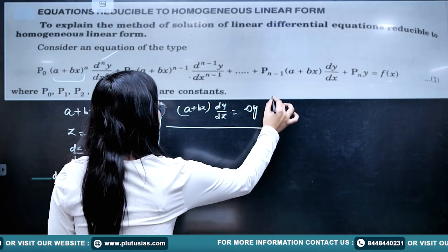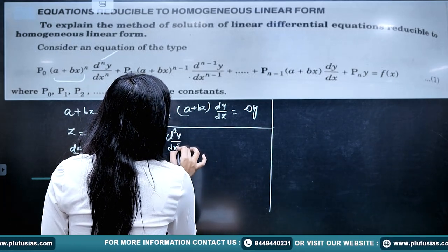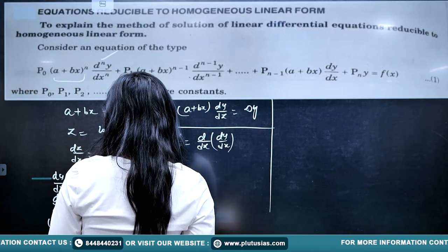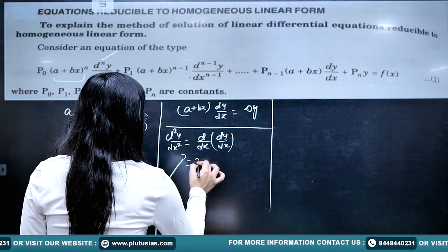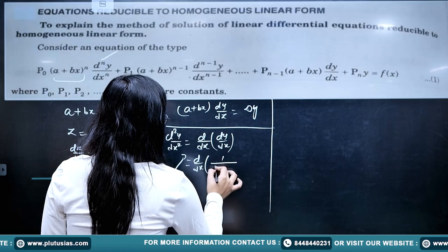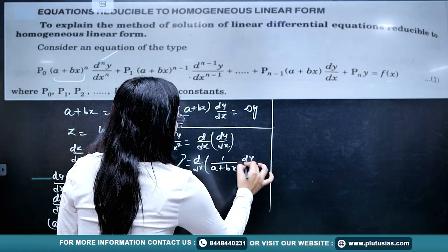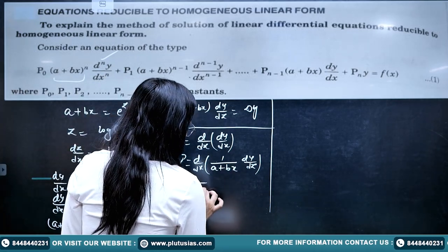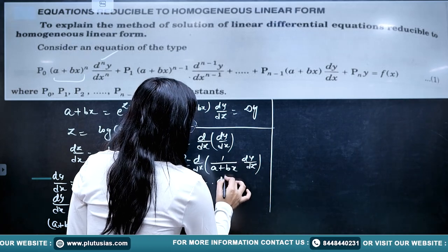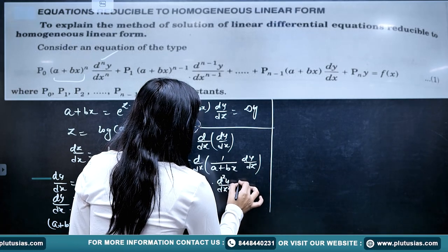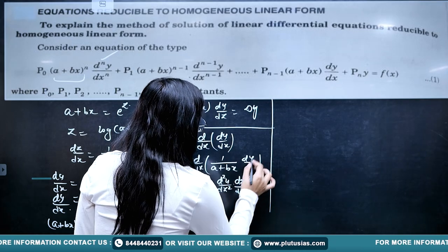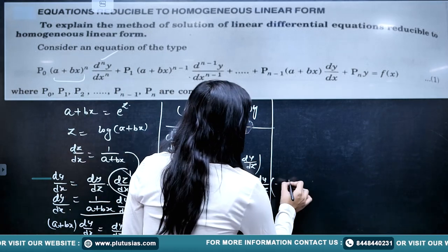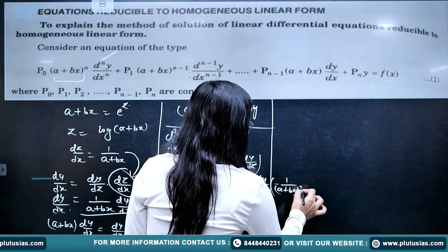Similarly, we need d²y/dx². Differentiating dy/dx = (1/(a+bx))·b·(dy/dz) with respect to x and applying the product rule: first function (1/(a+bx)) as is, times derivative of (dy/dz) with respect to z times dz/dx; plus second function dy/dz as is, times derivative of (1/(a+bx)), which is −b/(a+bx)². So d²y/dx² = (b/(a+bx))·(d²y/dz²)·(b/(a+bx)) − (b/(a+bx)²)·(dy/dz).